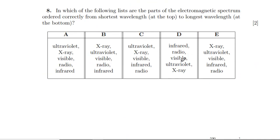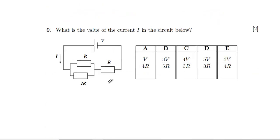Question 8: order the electromagnetic spectrum from shortest to longest wavelength. Not A — X-ray and UV are the wrong way round. Not B — radio and infrared are swapped. C is wrong for a similar reason. The correct ordering is D, giving away another easy four marks.